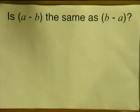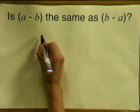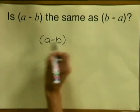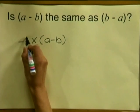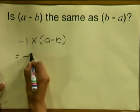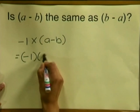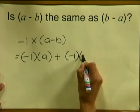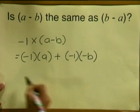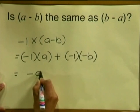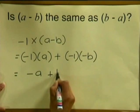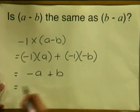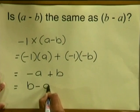Let me show you what I mean. We will look at this another way. To explain it, I am going to take the bracket a minus b and multiply it by minus 1. This is written as minus 1 multiplied by a, plus minus 1 multiplied by minus b. If we simplify that, we get minus a plus b, which is the same as b minus a.